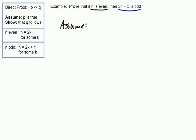We're going to assume that N is even, and we're going to have to show that 3N plus 5 is odd. Now mathematically, if we know that N is even, we write N equals 2K.